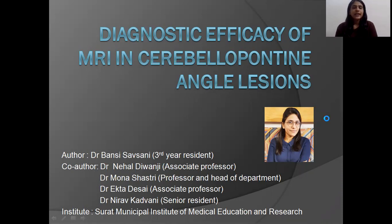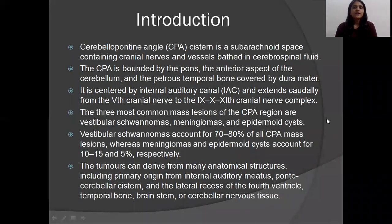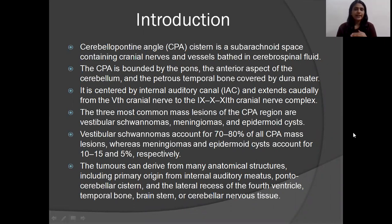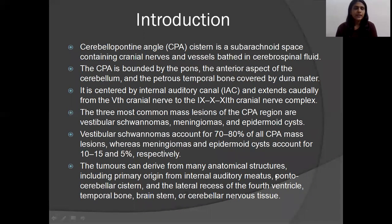What is a CP angle? It is a cistern of subarachnoid space containing cranial nerves, vessels, and CSF. CP angle is bounded anteriorly by the bones, posteriorly by the anterior aspect of the cerebellum and the petrous temporal bone covered by the dura mater. It is centered by the internal auditory canal, extending caudally from the 5th cranial nerve to the 9th, 10th, and 11th cranial nerve complexes.